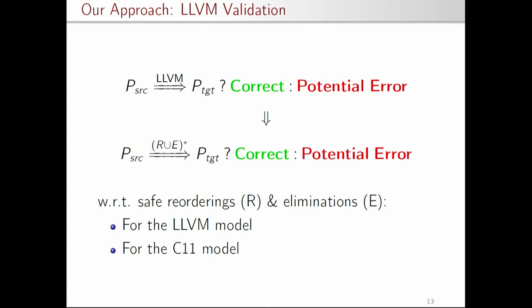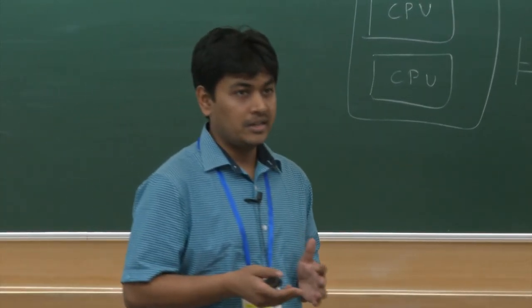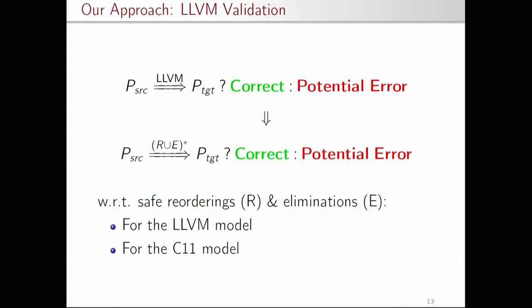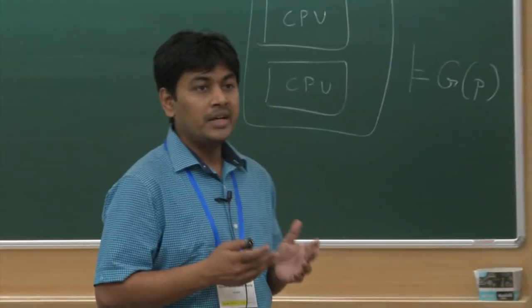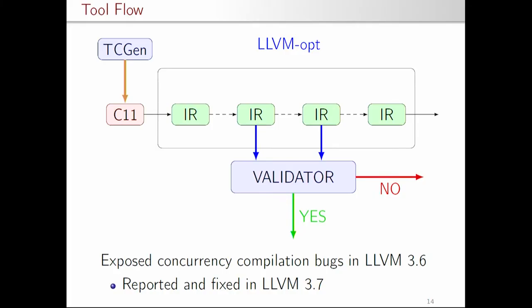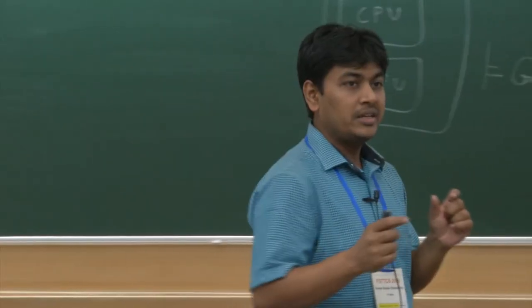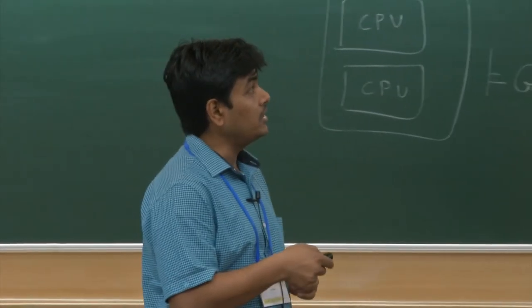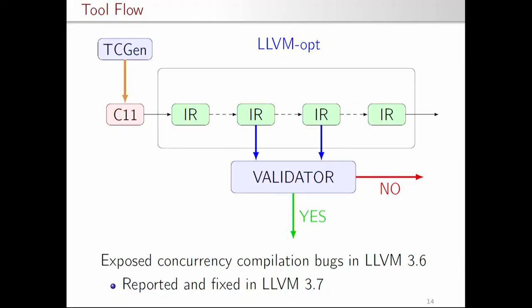We reduce the problem of validating transformation correctness to checking whether the target program is generated from a given C/C++ concurrent program only by a combination of correct reordering and correct elimination transformations. Similarly to the C11 model, we also identify a set of correct transformations for the LLVM model and develop our validator based on that. We built two components: a test case generator that generates arbitrary C/C++ concurrent program snippets, compiles them with LLVM while keeping intermediate representations throughout, and a validator that compares those intermediate representations to check whether transformations were done correctly.